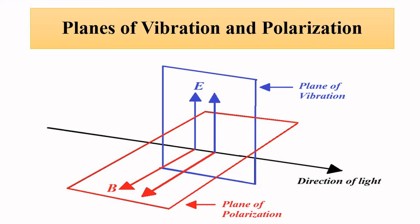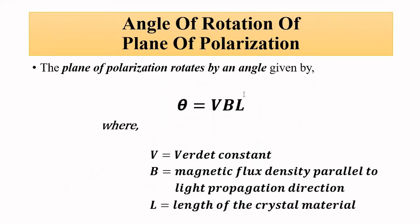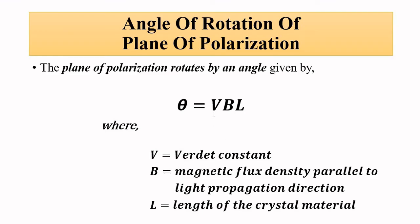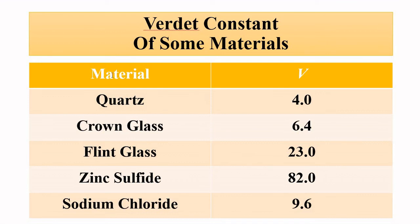This is the whole concept of magneto-optic modulation: because of the rotation of the plane of polarization, the electric vectors are also rotated by the same angle, and that gives us the modulating parameter. The type of material used depends upon the Verdet constant. Some commonly used materials and their Verdet constants are: quartz — 4, crown glass — 6.4, flint glass — 23.23, zinc sulfide — 82, sodium chloride — 9.6.